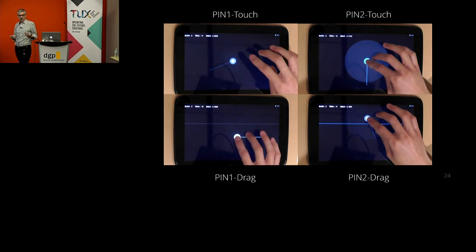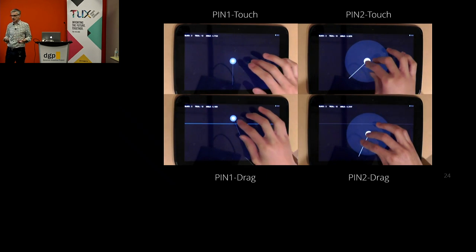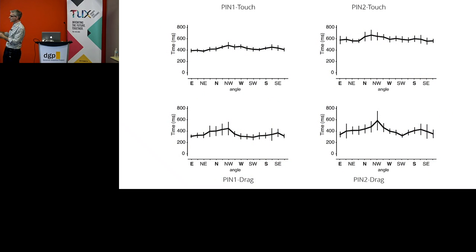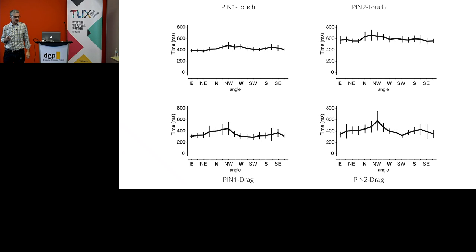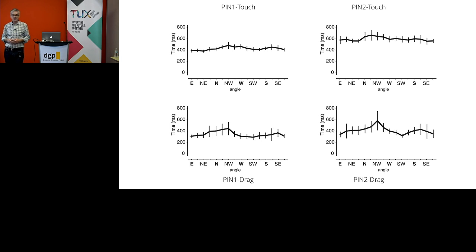We measured how fast they did it, how many errors, and asked for subjective ratings based on different angles. Here's a graph showing time in milliseconds based on the unwrapped 360-degree radial angle — you can see compass directions. We looked for trends showing where time has bumps or dips — lower time is better. You can see some pretty clear trends, especially for some conditions. Error bars show 95th percentile confidence intervals.